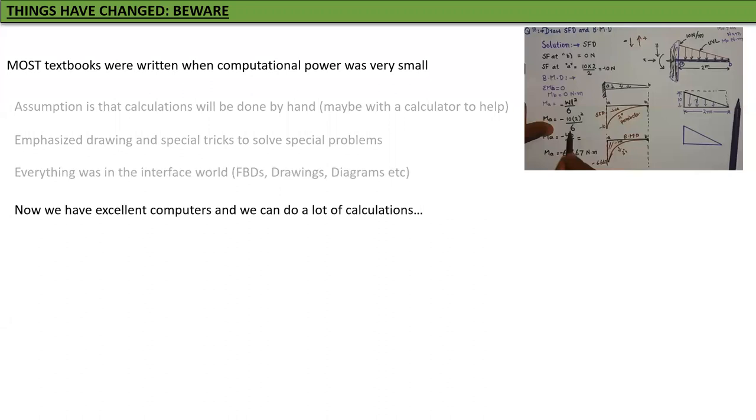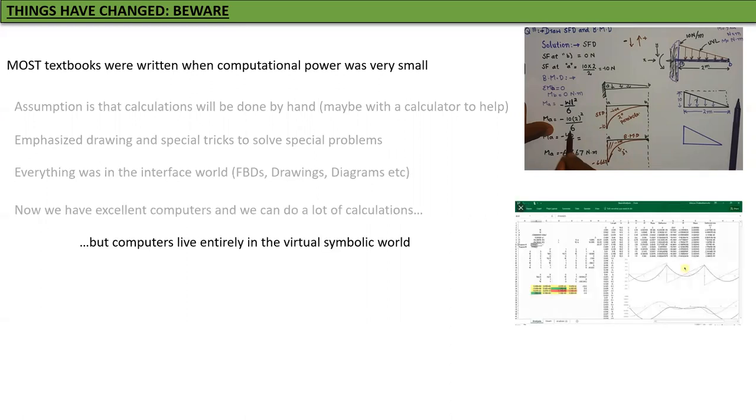Now what has happened is that we have excellent computers and we can do a lot of calculations, but there's no free lunch. Computers live entirely in the symbolic world. I have shown an Excel spreadsheet. You can see instead of drawings and things like that, you now have rows and rows of numbers and Excel doesn't care what the numbers mean. You might care but Excel doesn't care.